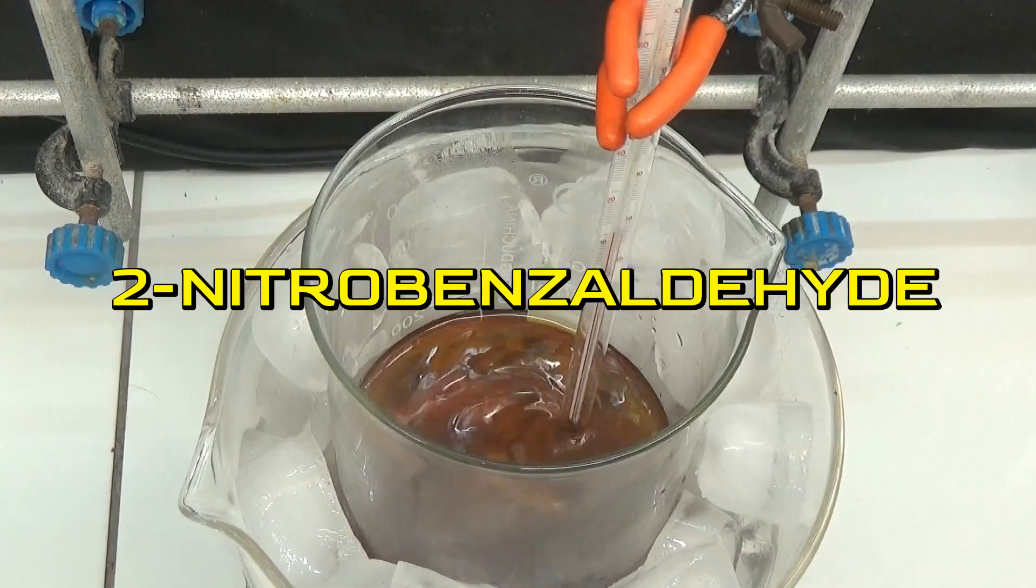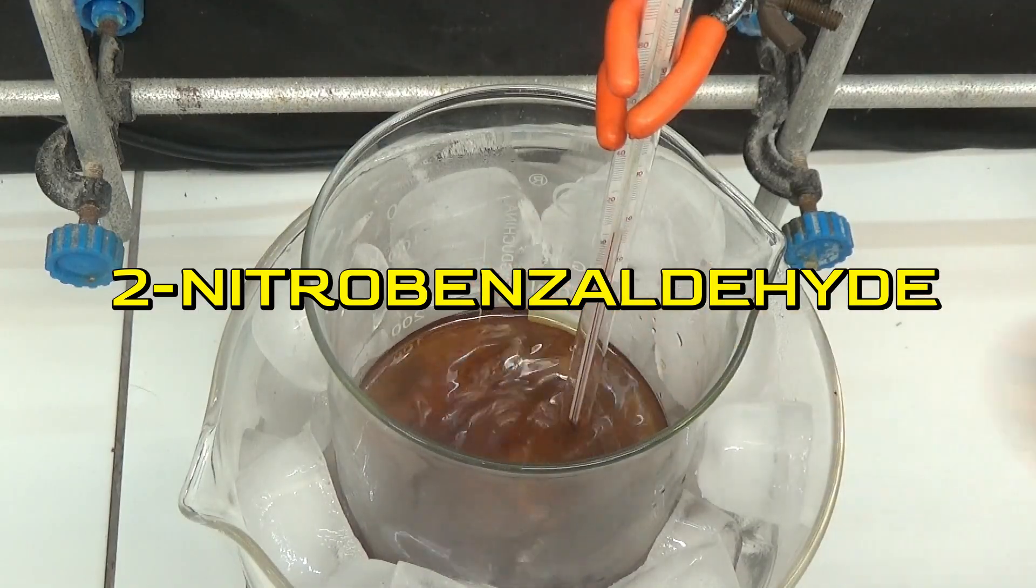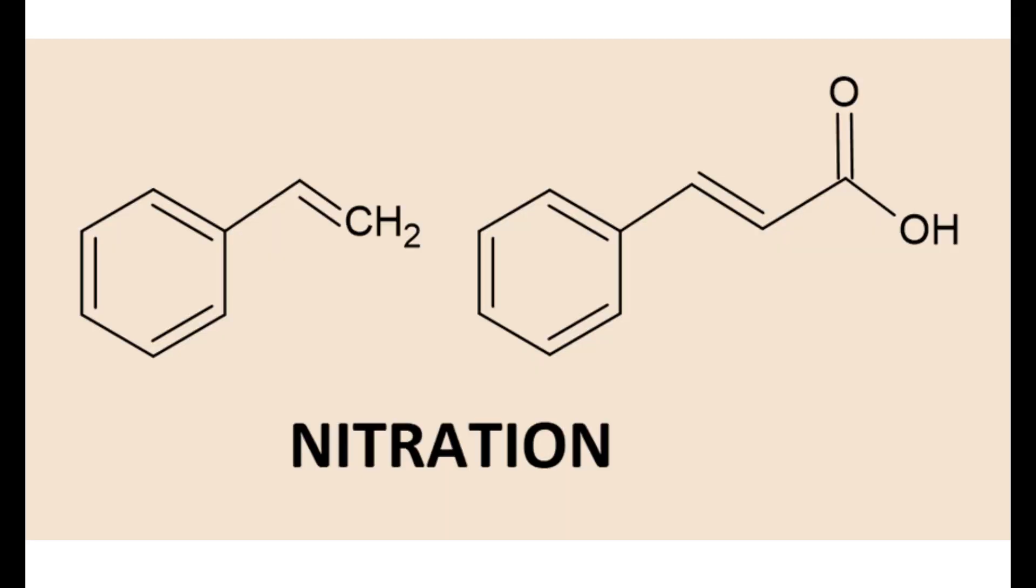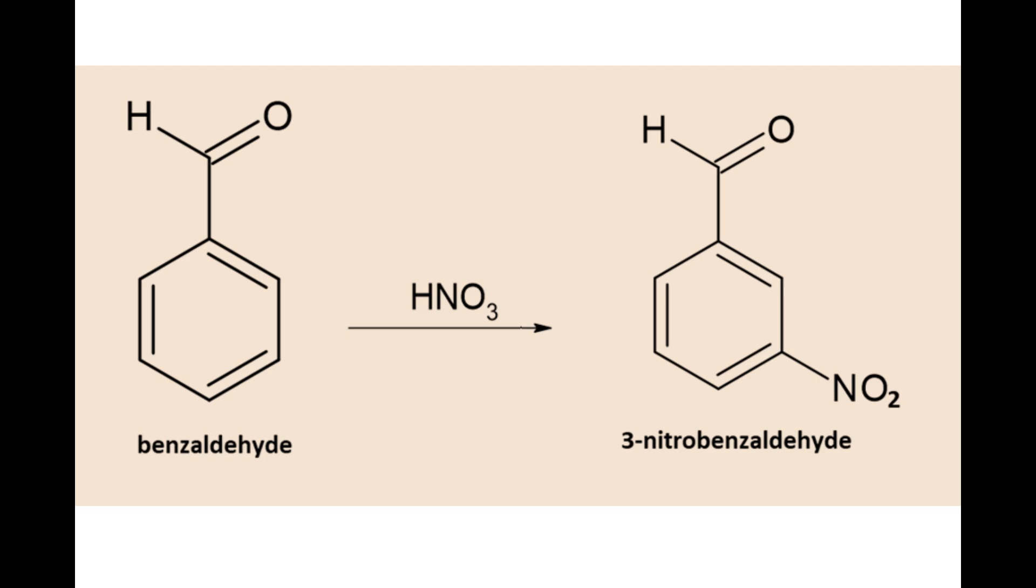In this video we are going to obtain 2-nitrobenzaldehyde. For this synthesis there are several routes to obtain it. The main routes are by nitration of styrene or cinnamic acid. If direct nitration of benzaldehyde is attempted, this route does not yield good yields and produces mainly 3-nitrobenzaldehyde.